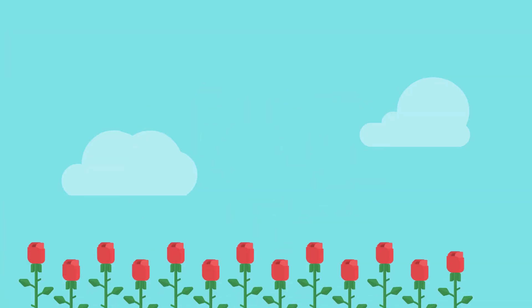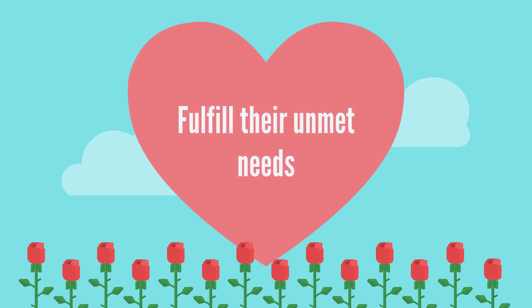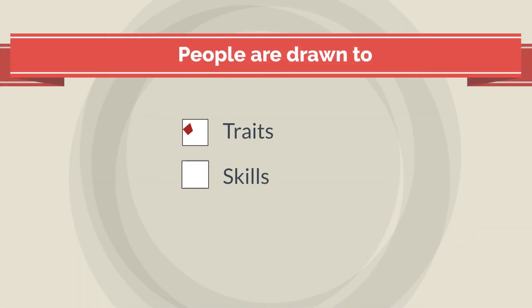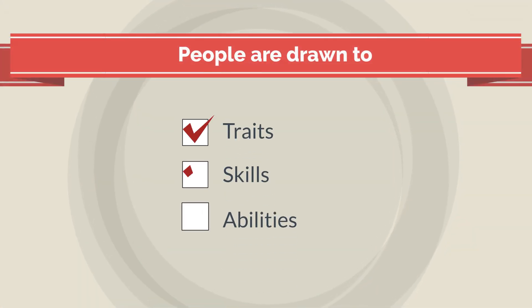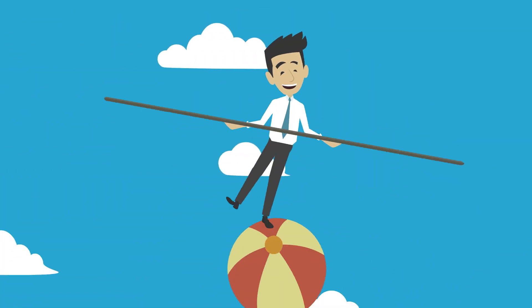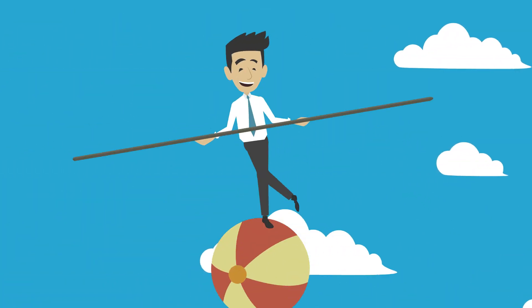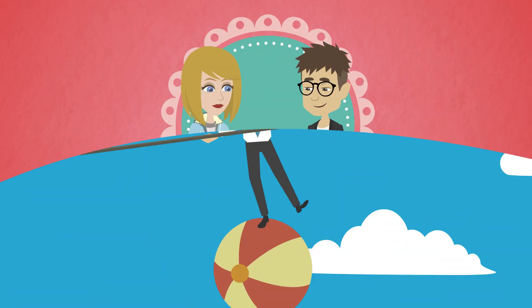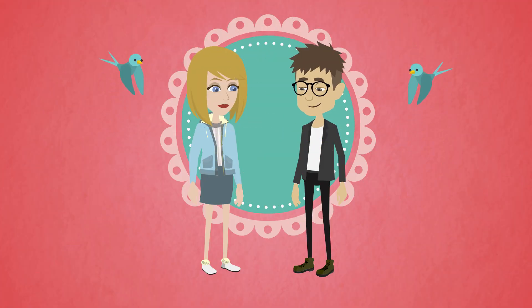The core idea of Need Complementarity Theory is that individuals seek relationships that fulfill their unmet needs. People are drawn to those who possess traits, skills, or abilities that they themselves lack or desire. This dynamic can create a sense of balance and completeness within the relationship, and these differing traits can complement each other.